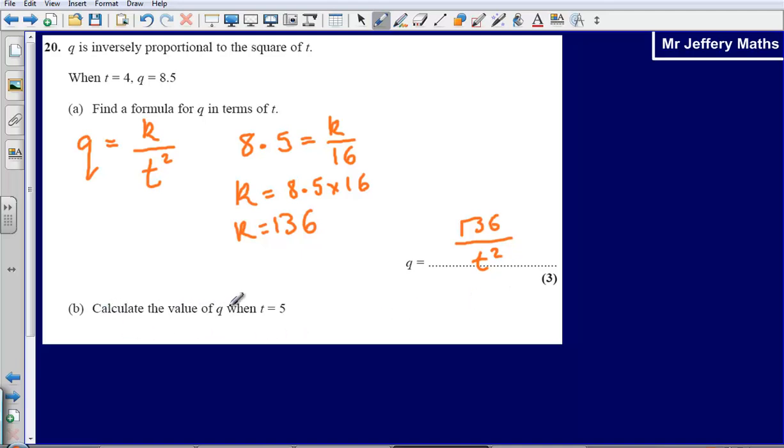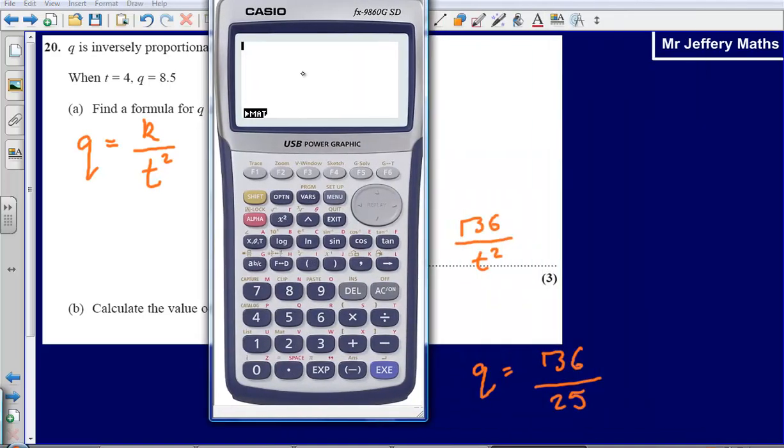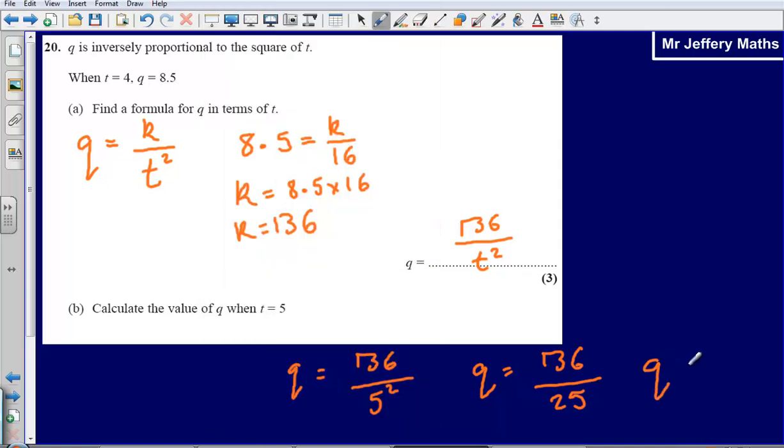Part B asks us to calculate the value of q when t equals 5. Well now all we are going to have to do is use our formula that we have just found out and say that q is equal to 136 divided by t squared, divided by 5 squared. So that means that q is equal to 136 divided by 25. And so again using the calculator, 136 divided by 25, q is equal to 5.44.